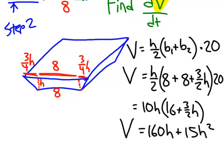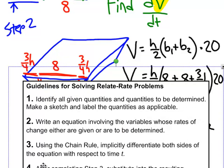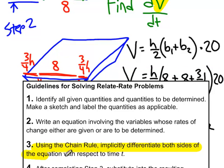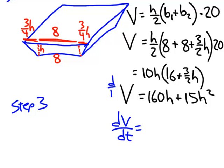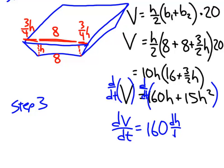Step three: use the chain rule to implicitly differentiate both sides of the equation with respect to time T. On the left we get dV/dt. Differentiating the right side: the derivative of 160h gives 160 dh/dt, and differentiating 15h squared gives 30h times dh/dt. So dV/dt equals 160 dh/dt plus 30h times dh/dt. That was step three.